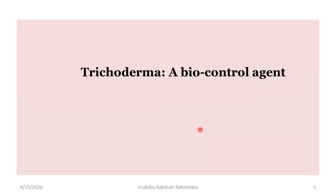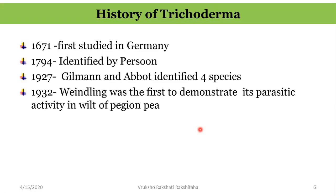Now let us look into one particular biocontrol agent — Trichoderma. A little bit about its history. In 1671, Trichoderma was first studied in Germany. In 1794, it was identified by Persoon. In 1927, Gilman and Abbott identified four species of Trichoderma. In 1932, Weiling was the first person to demonstrate that Trichoderma can parasitize the fungus which causes the wilt of pigeon pea.